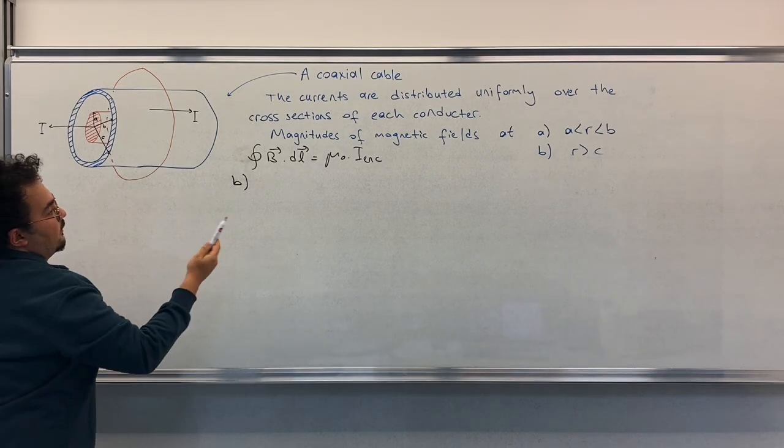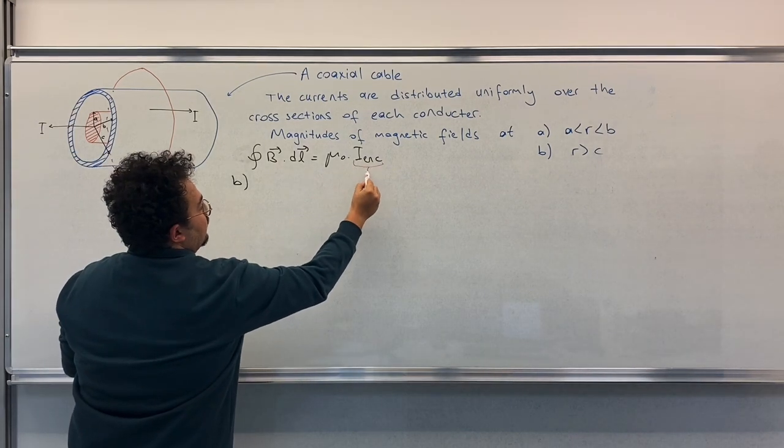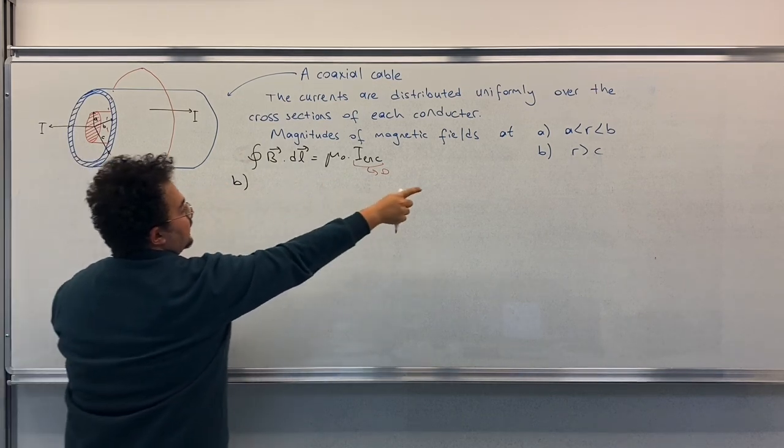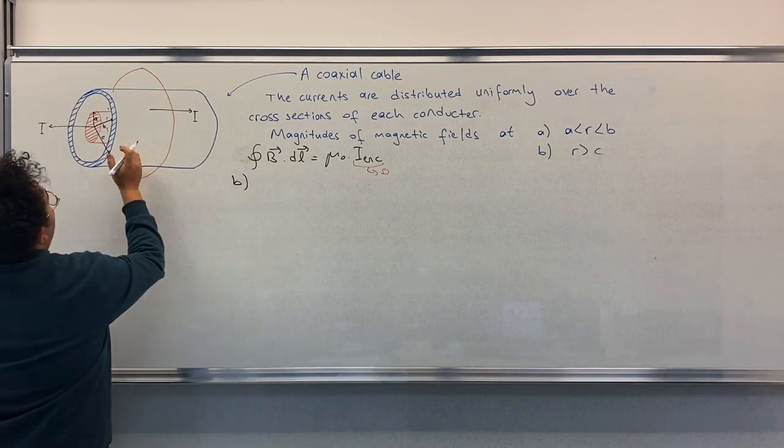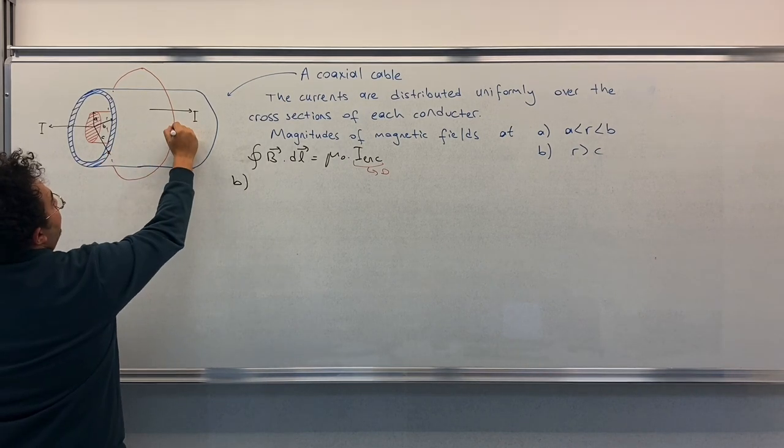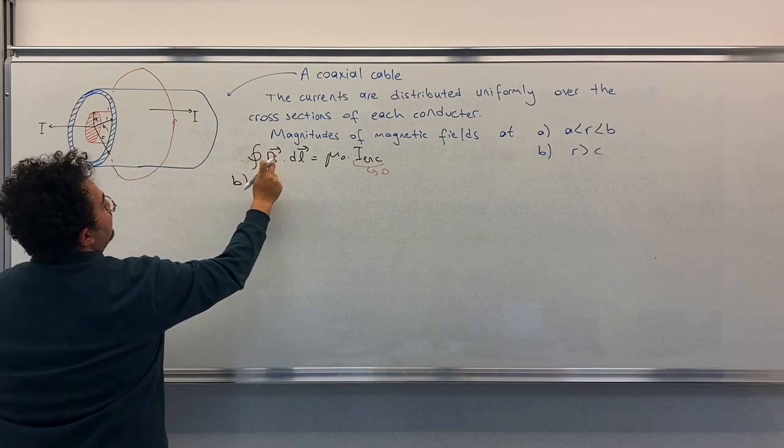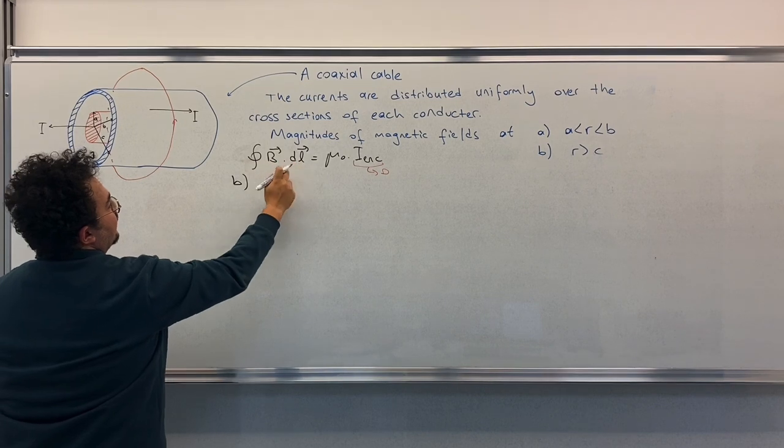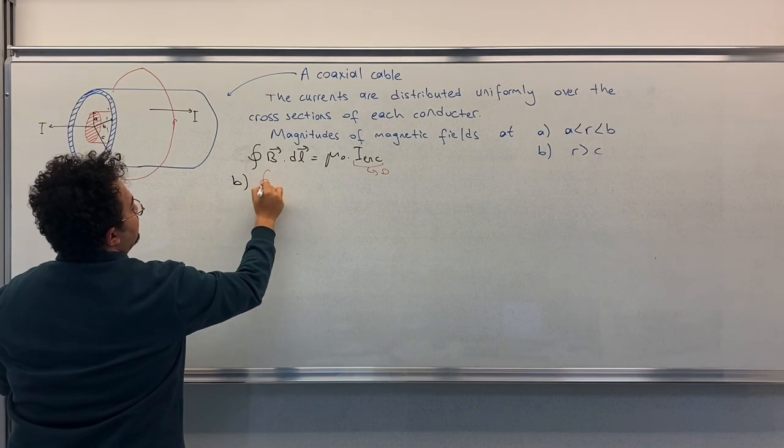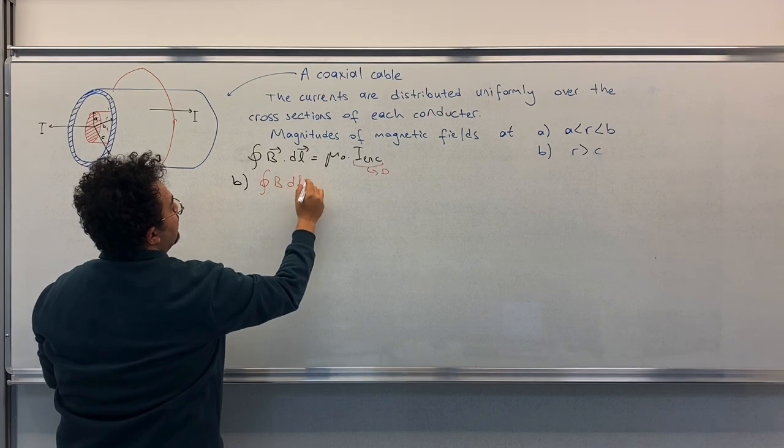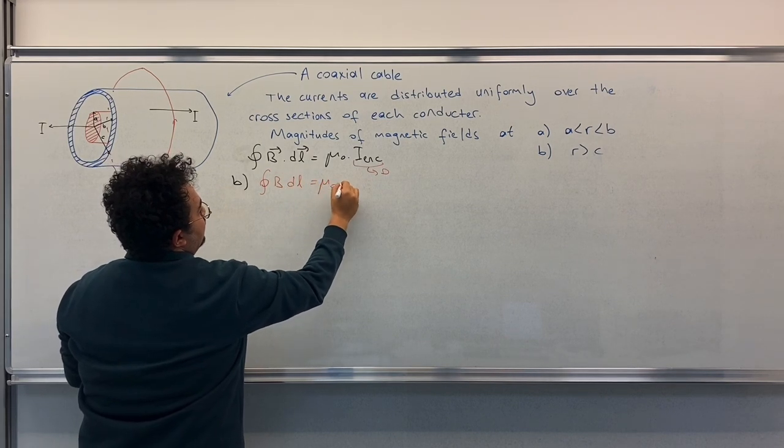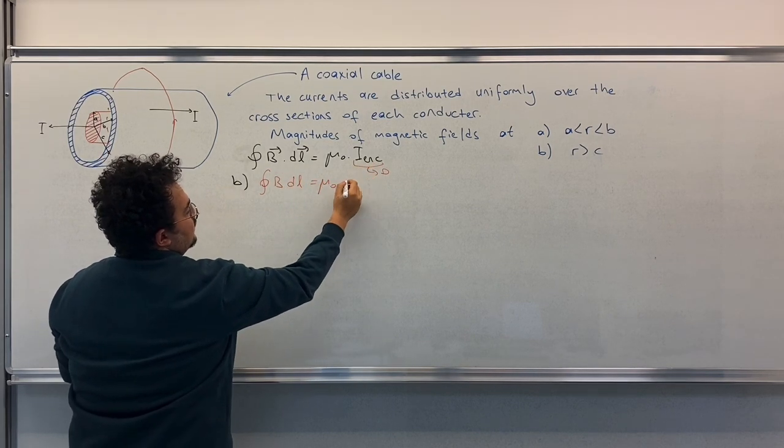So we have in fact zero current enclosed in part B. So as you know, normally we will have a parallel relationship with B and DL. So they will just become B times DL equals μ₀ times I enclosed, which is now zero.